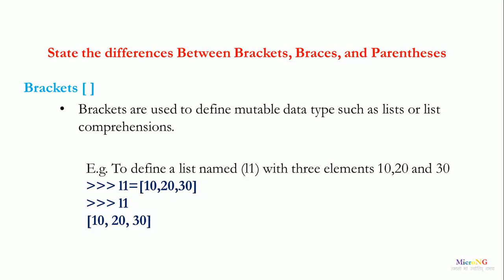For example, we create a list named L1 with three elements: 10, 20, and 30. During the creation, the elements are written within the brackets, so L1 equals brackets 10, 20, and 30.